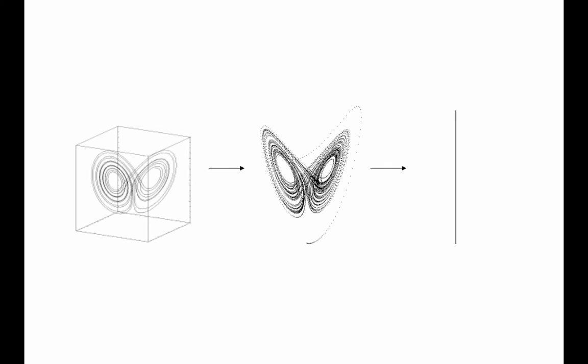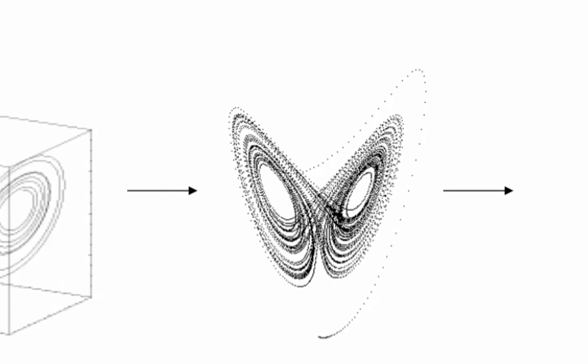In all these cases, the projection effected by not measuring all the state variables causes trajectories that don't cross in reality to look like they're crossing. If you look at the center of the 2D projection, you see lots of trajectory crossings. That's a problem for two reasons. First, in the kinds of systems covered in this course, there can be only one downhill direction at any point in state space. Projections cause trajectories to violate that requirement — that is, to cross — and if sensors cause projections, that's a problem.